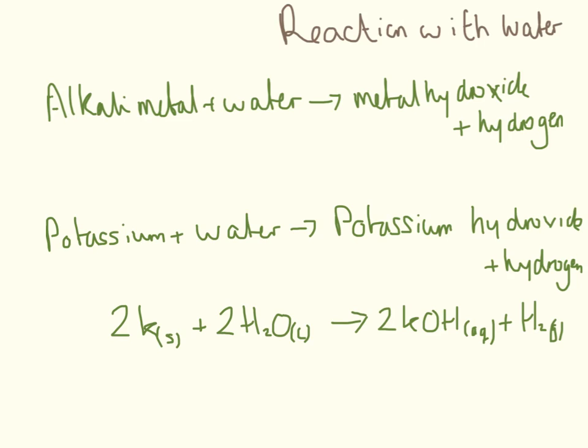So the reaction that actually takes place is alkali metal plus water is going to make metal hydroxide plus hydrogen. Here's an example for you here. We have potassium plus water is going to make potassium hydroxide plus hydrogen. Here's the balanced equation. And you'll notice I've put state symbols on all of these. State symbols are going to become a lot more frequent as we move into the more complicated side of chemistry.